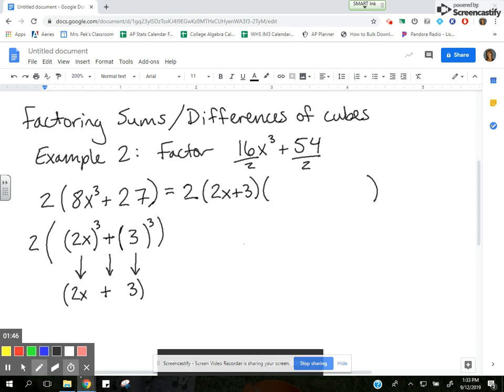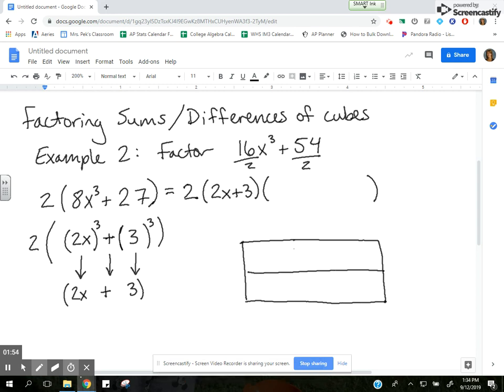To do this, I like to use a box. It's kind of like a little puzzle box. So I make a 3 by 2 box, and the factor that I've already figured out, (2x + 3), is going to go on the side of my box.